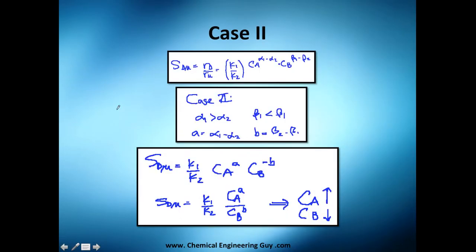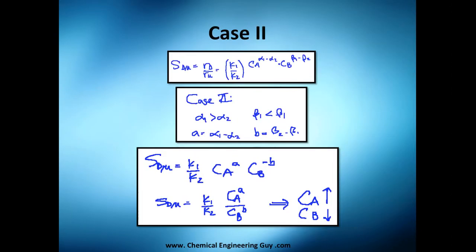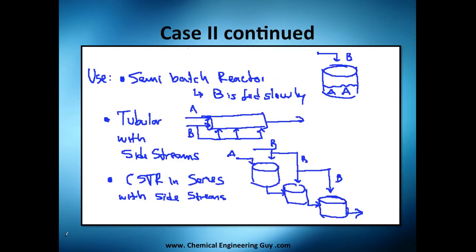Now for Case 2: alpha is the same direction as before, but beta1 is less than beta2, so the beta exponent becomes negative — meaning CB appears in the denominator. That means we must increase CA and decrease CB. The concentration of A must be high and the concentration of B must be low. So how do we achieve high concentration of A but low concentration of B?